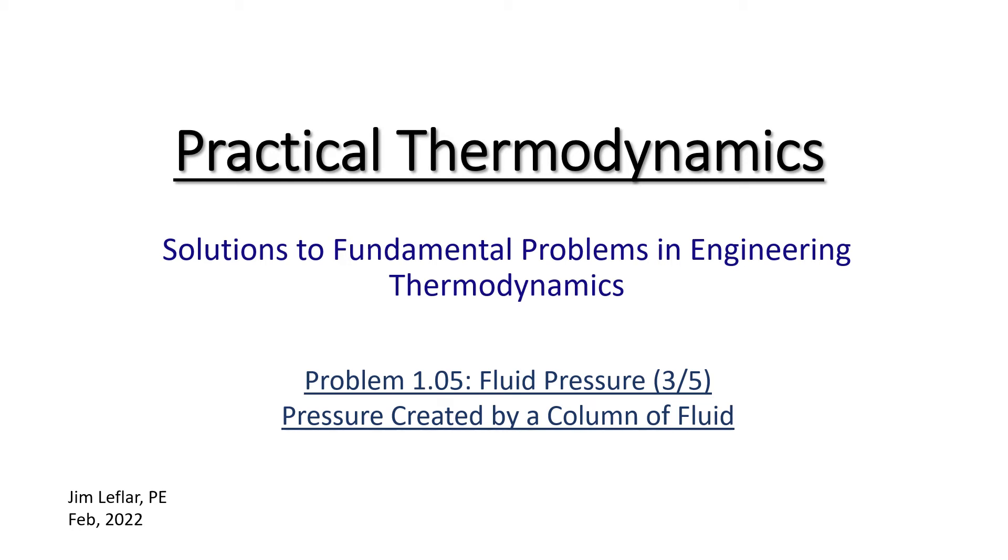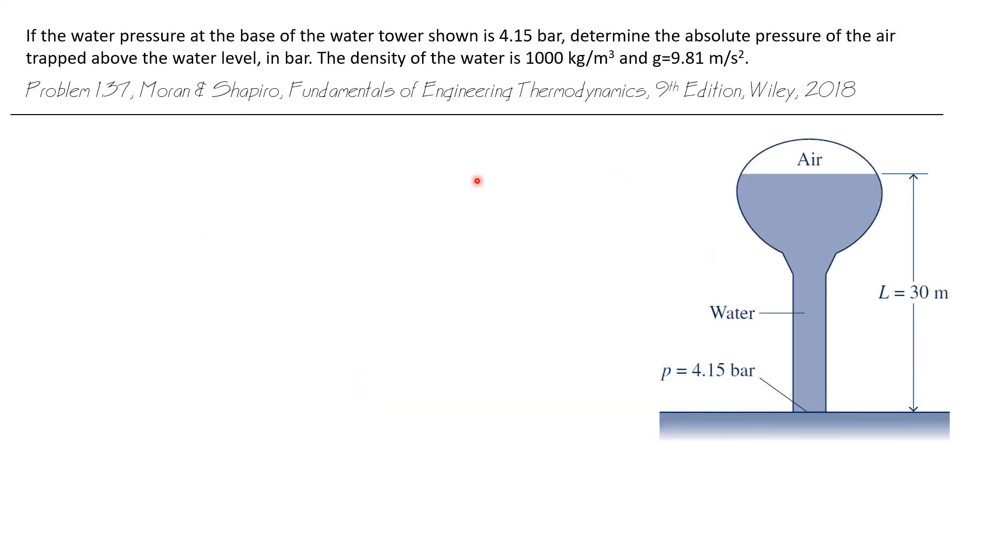Let's solve another simple problem involving the pressure created by a column of fluid. If the water pressure at the base of the water tower shown is 4.15 bar, we want to determine the absolute pressure of the air which is trapped in the tower above the water level.